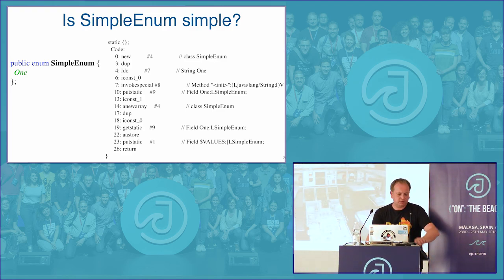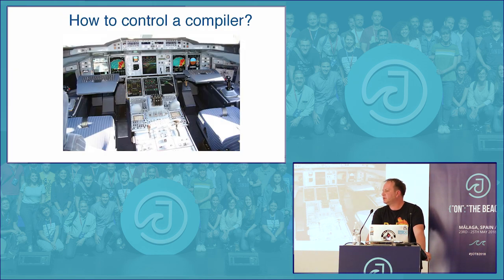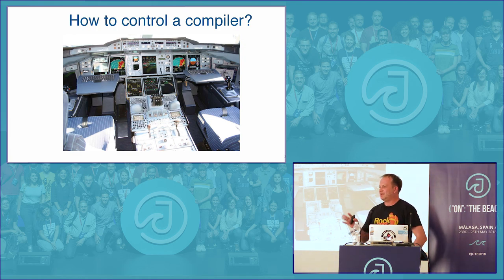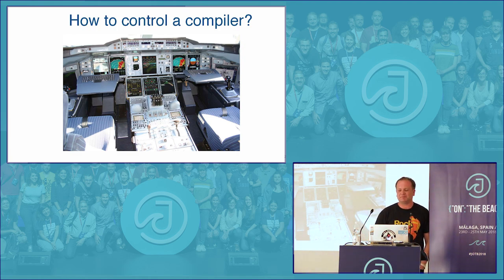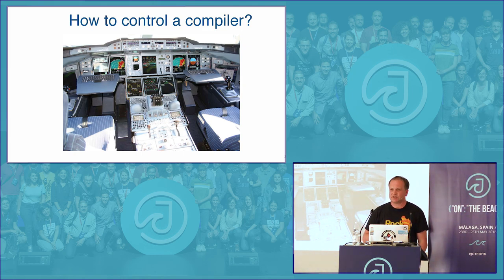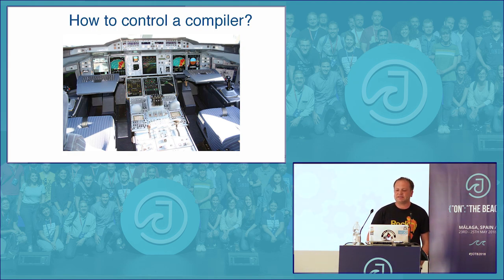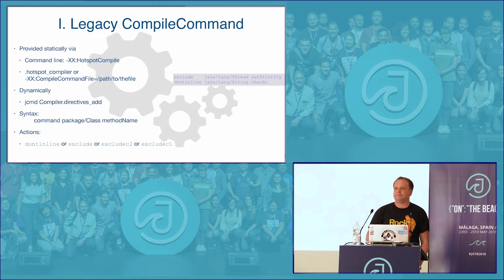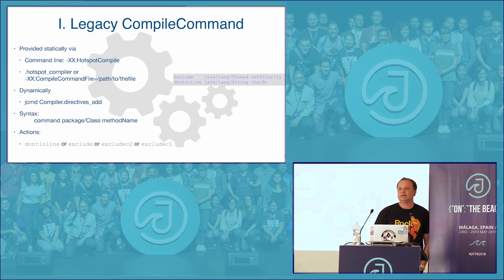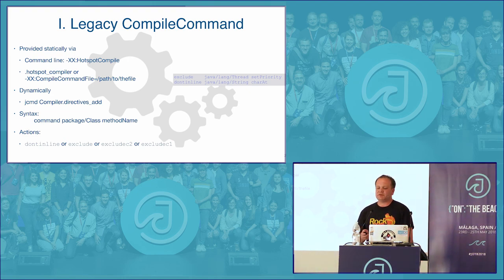Let's talk about the APIs we have. Since Java 5, there has been a legacy compile command format — a text file you supply to the VM that acts according to specified rules. The language is extremely simple and the set of commands is very limited. You can supply commands through a text file or through the -XX:CompileCommand option. You can say: exclude this from compilation, definitely compile this method, inline or don't inline this method in all compiles. That's pretty much all you can do.